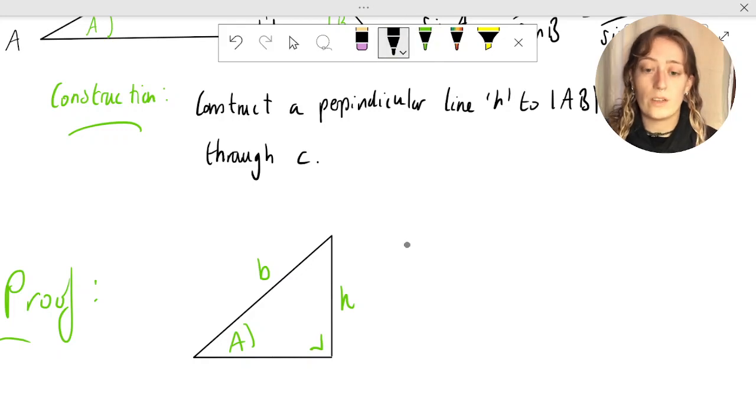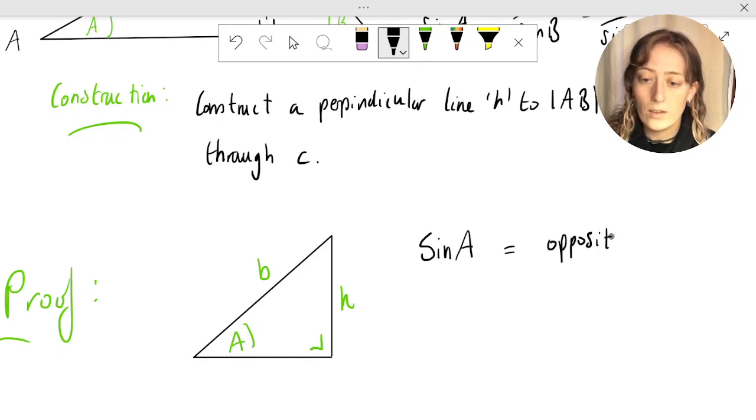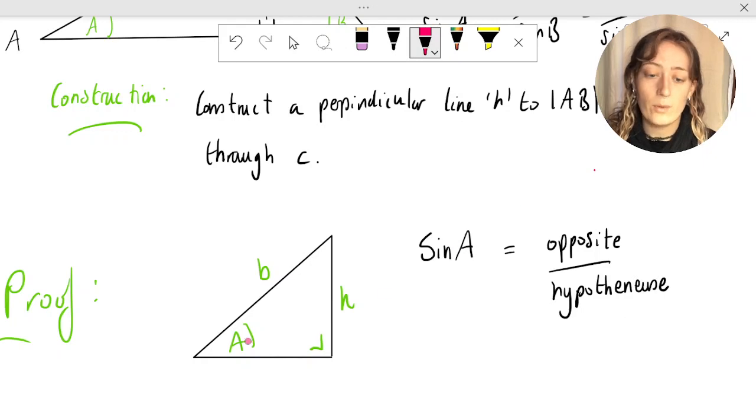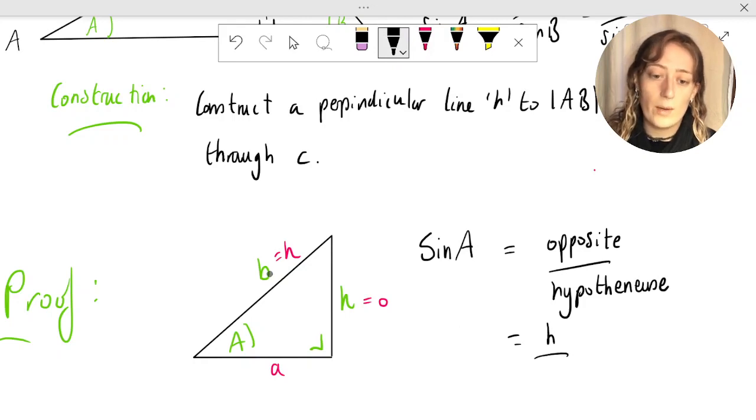What we're going to use is that sine of some angle a is equal to the opposite over the hypotenuse of a right angle triangle. Let's label the sides of this right angle triangle. h is opposite a, so this is the opposite. b is opposite the right angle, so it is the hypotenuse. The other side is just the adjacent side, which we're not going to need. So opposite equals h over the hypotenuse b equals sine a.